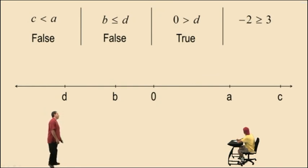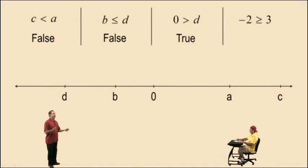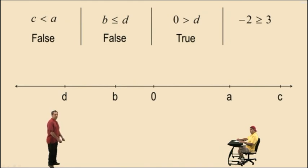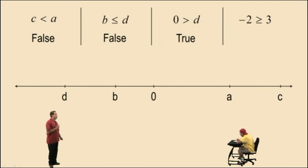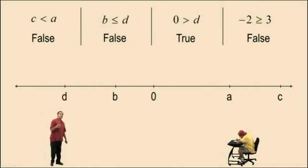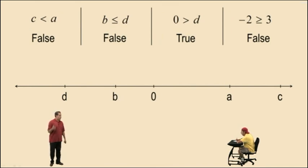Now, negative 2 greater than or equal to 3 — this is not a number line, Charlie, so simply ask yourself: is negative 2 to the right of positive 3 on the number line? Nope. And negative 2 does not equal 3, so both cases are no. Therefore this statement is false. So think about inequalities on a number line — that might make it easier to determine if the statement is true or false. Anyway, that's enough for today. We'll see you again soon.